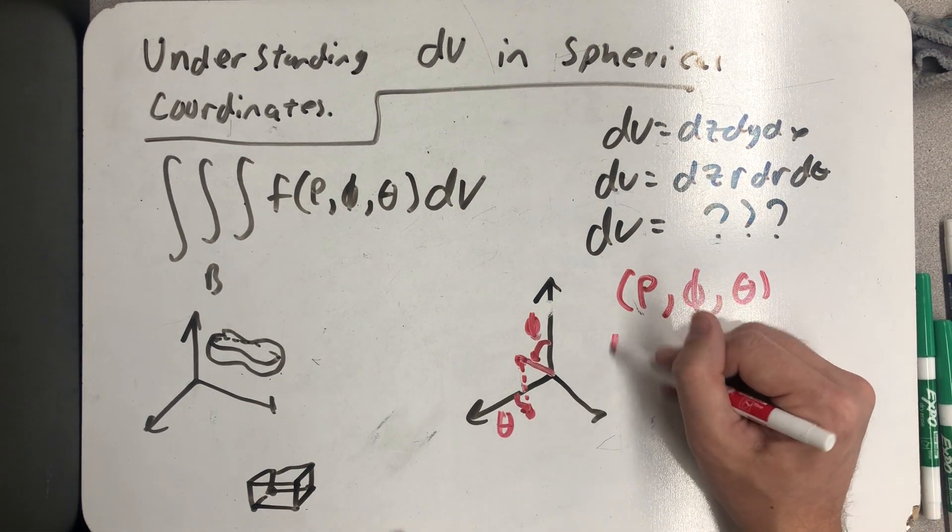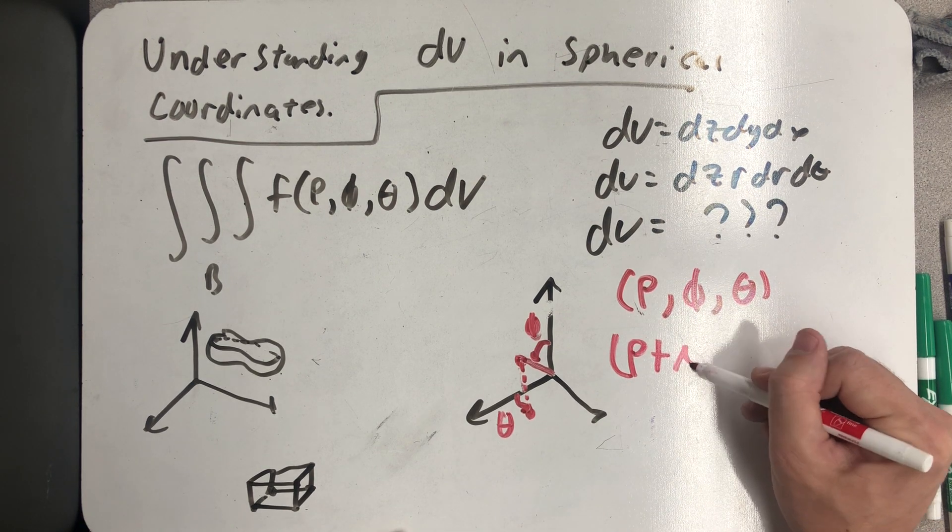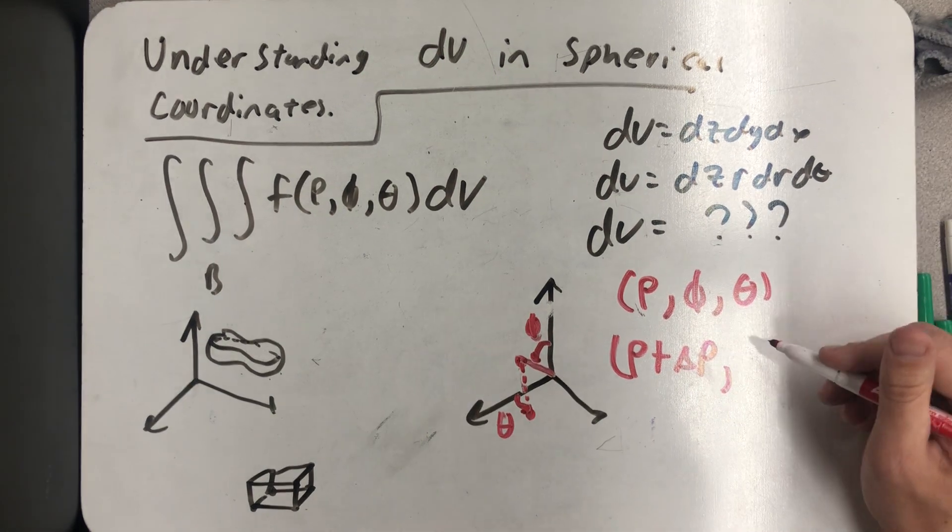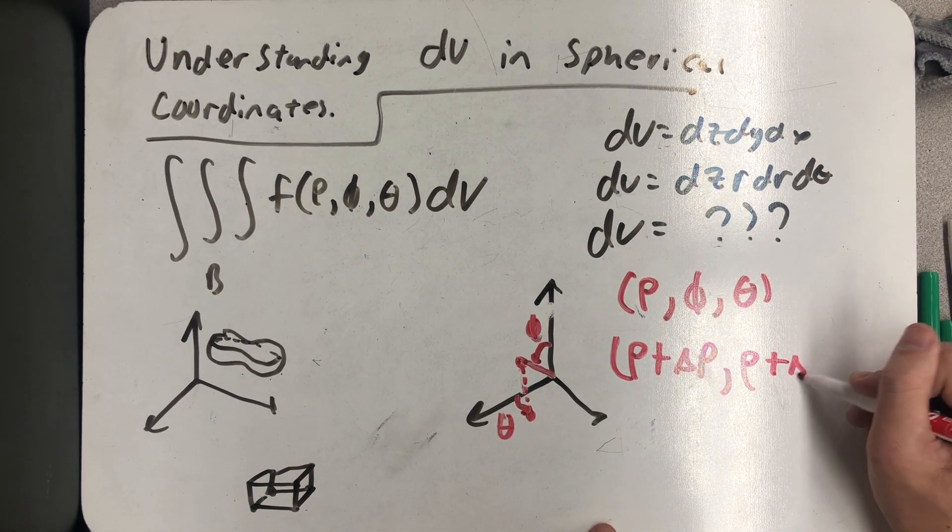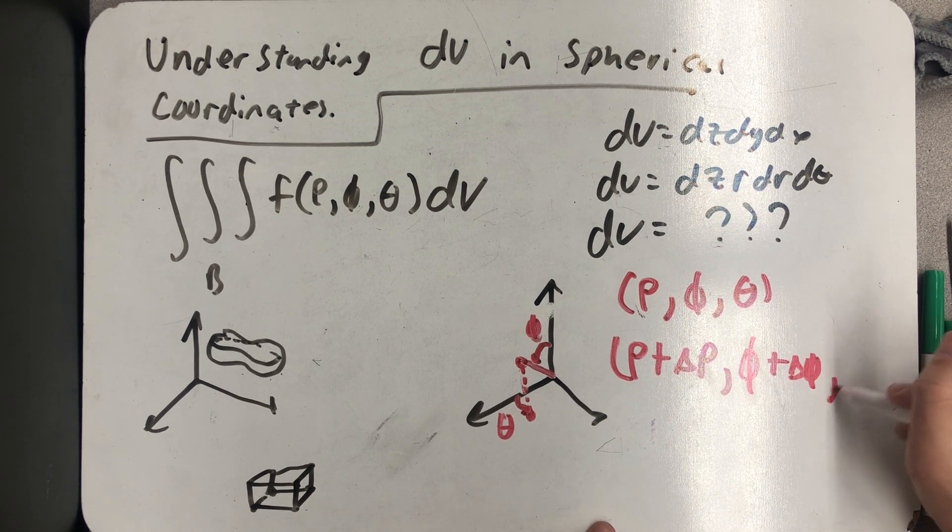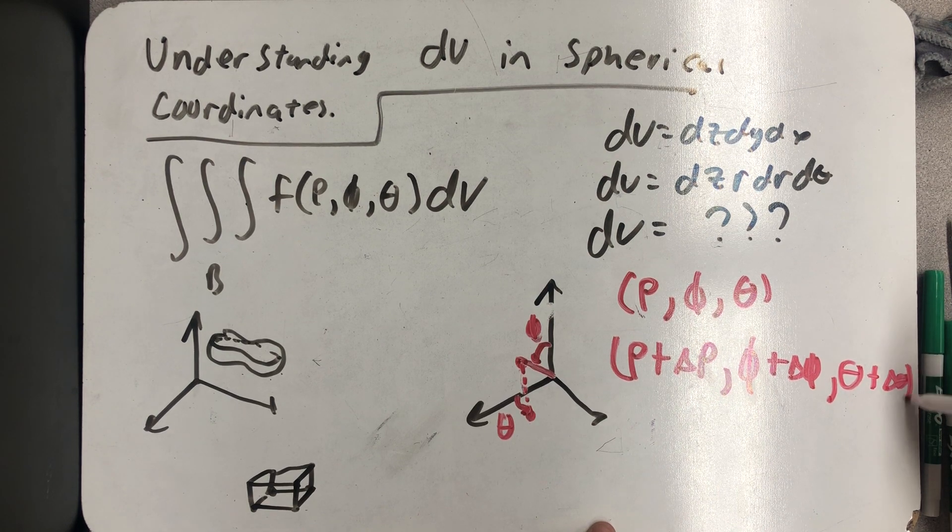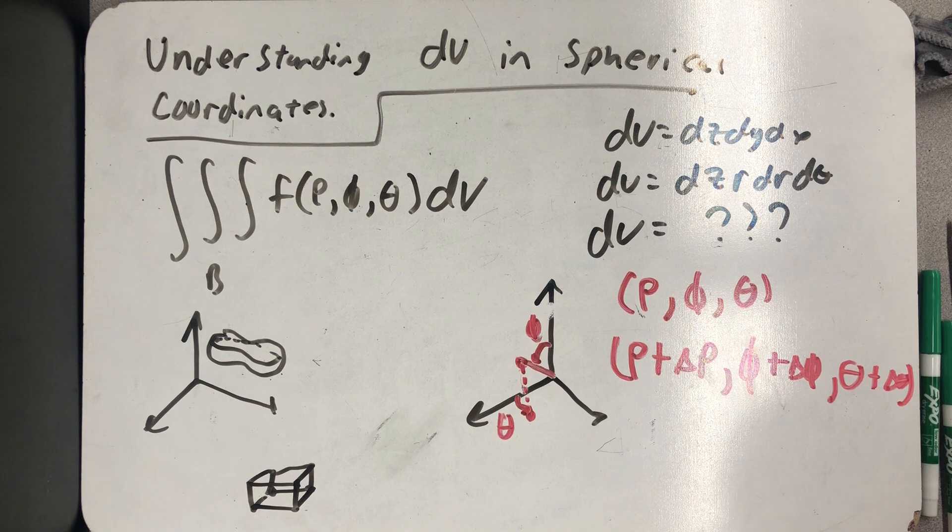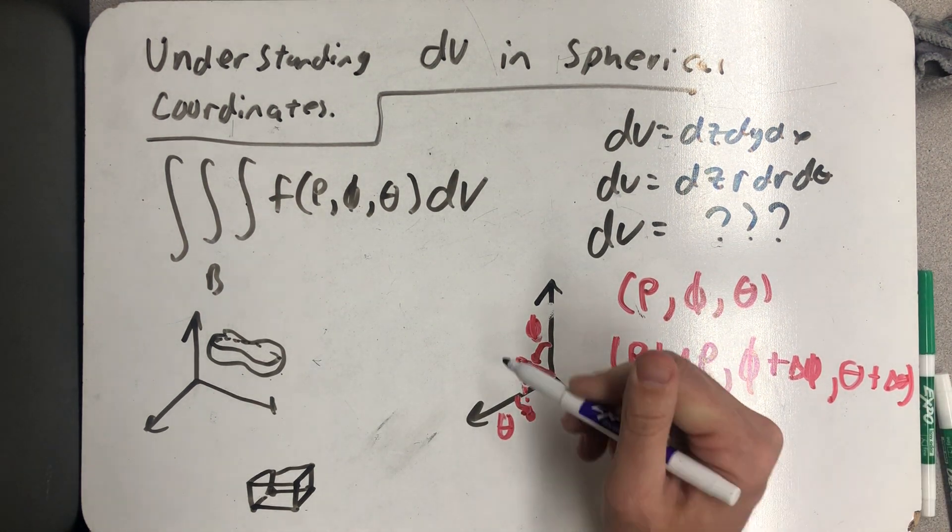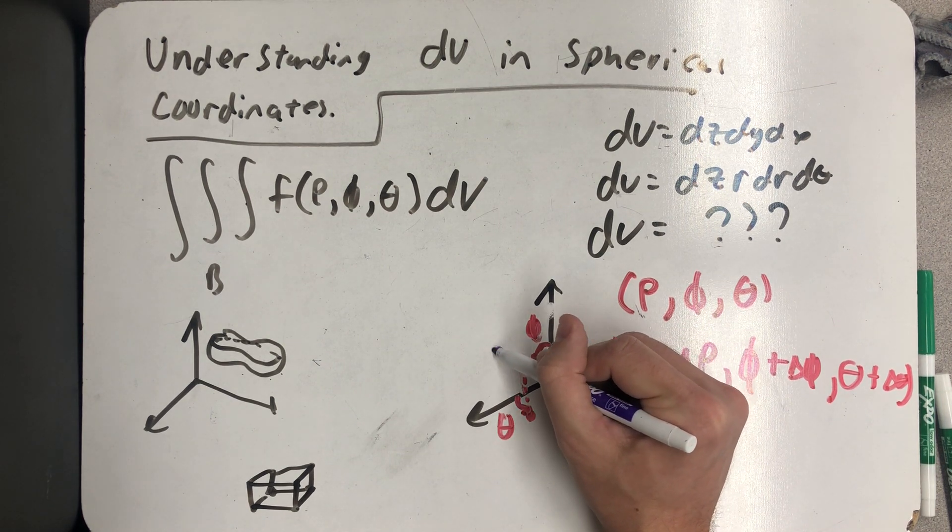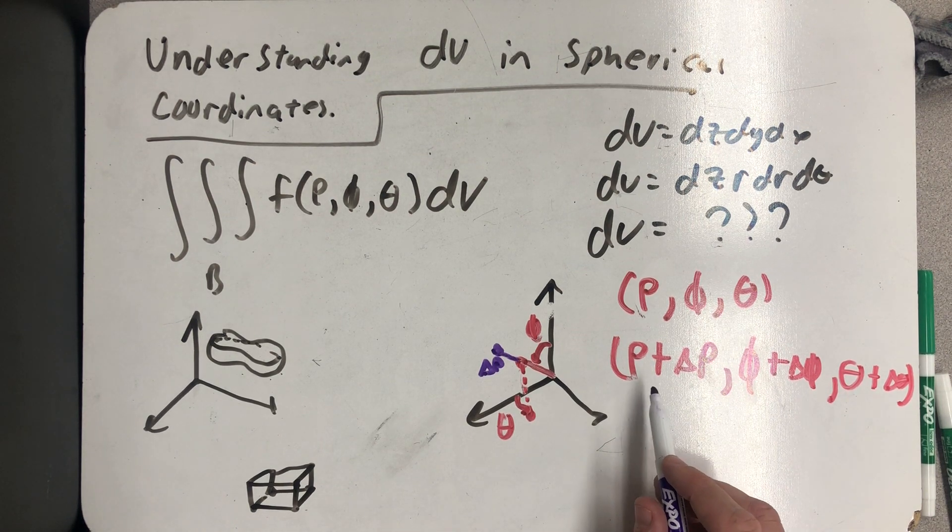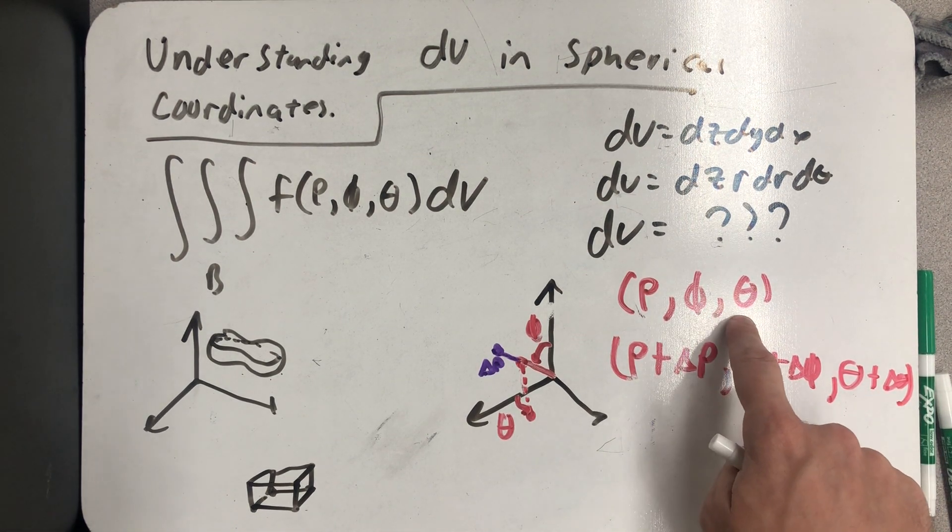So let's think about what would happen if I incremented all of those things one by one. So let's imagine that I first increment ρ by adding a little bit, a Δρ. Well, I'd go a little further out. Δρ. And so now that would be the point ρ + Δρ, φ, θ, right? I haven't changed anything else.